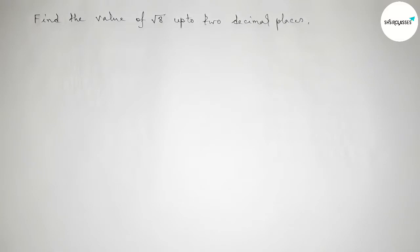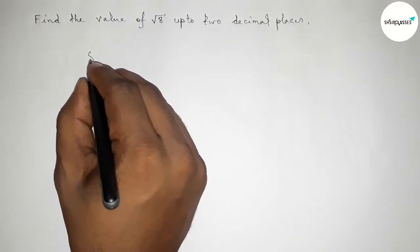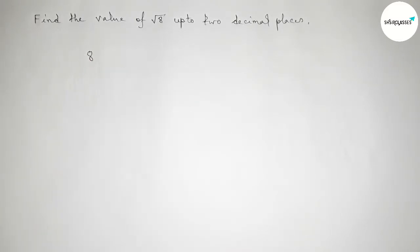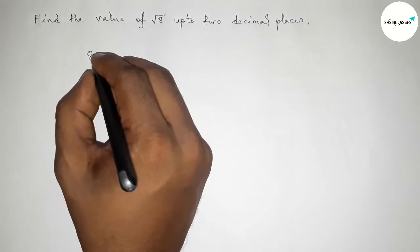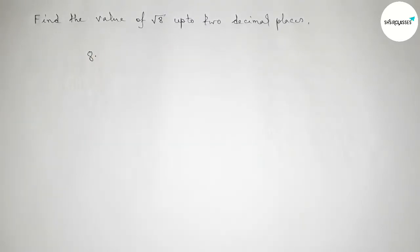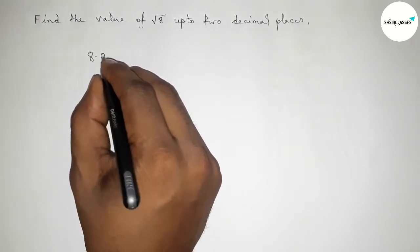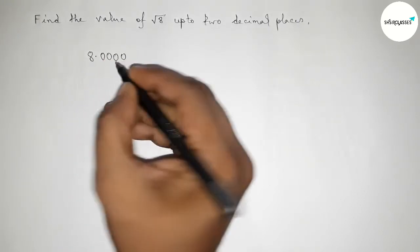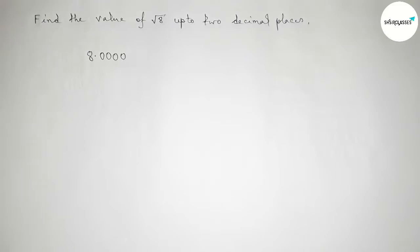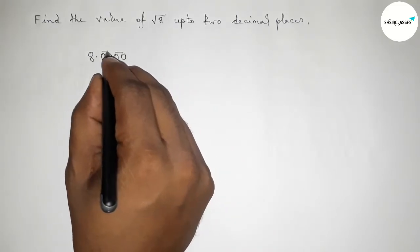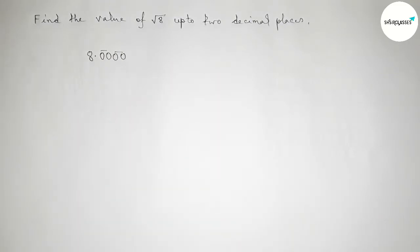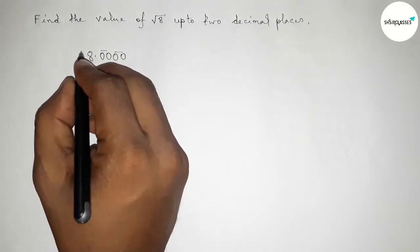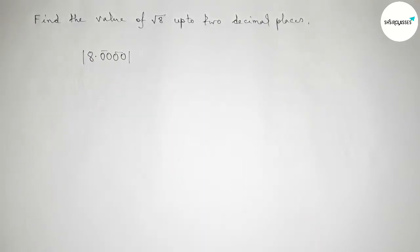First of all, write the number 8 here. Now we can take a point beside 8. For up to two decimal places, we take four zeros and make them as pairs, taking two zeros as a pair. So we get two pairs of zeros.